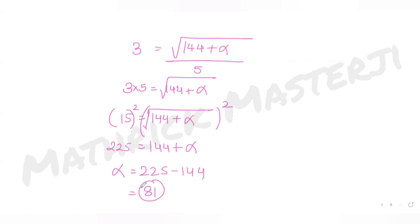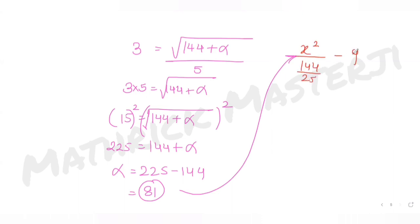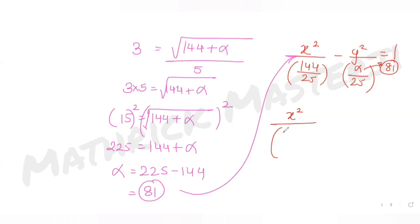So alpha = 225 − 144 = 81. Substituting alpha = 81 back into the hyperbola equation x² over (144/25) minus y² over (alpha/25) equals 1, we get x² over (144/25) minus y² over (81/25) equals 1.